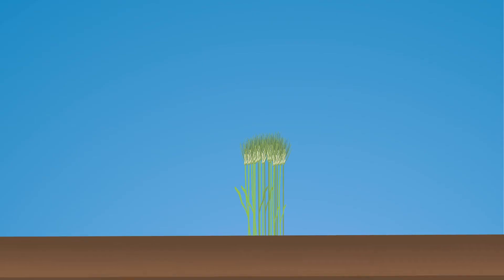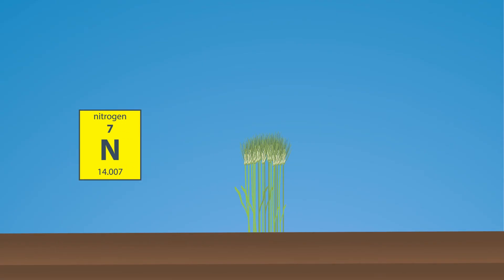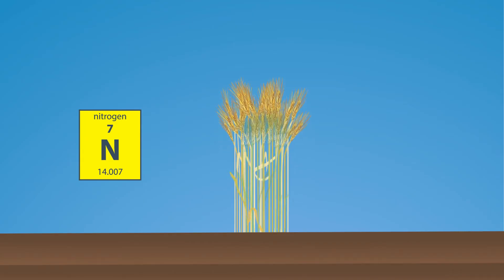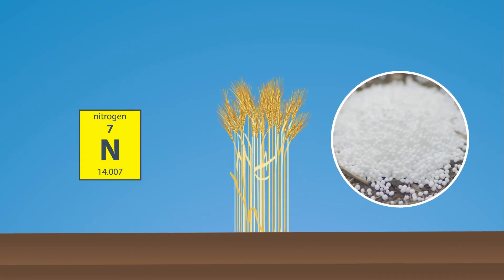Each nutrient does many things for the plant, but the basics are this. Nitrogen is often called the builder. It is necessary for chlorophyll synthesis, which helps the plant stay healthy, green, and strong. Nitrogen helps make plant proteins as well.